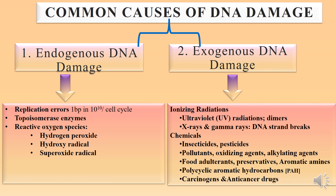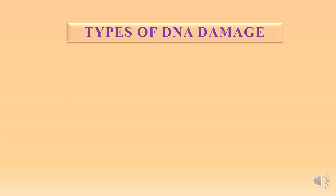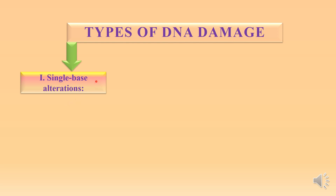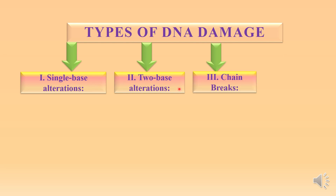Now, what is DNA damage? There are four types: the first type is single base alteration, the second type is two base alteration, the third type is chain breaks, and the fourth type is cross linkages. So there are four types of DNA damage in this classification.